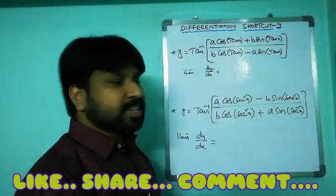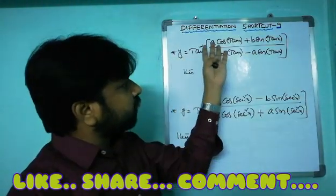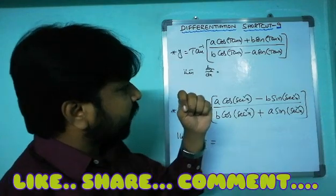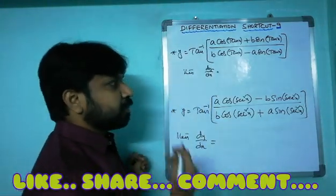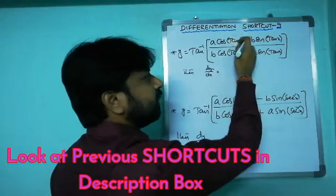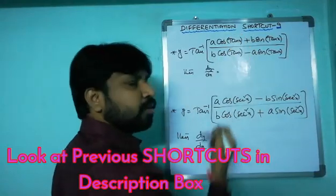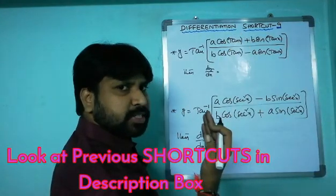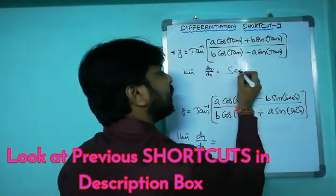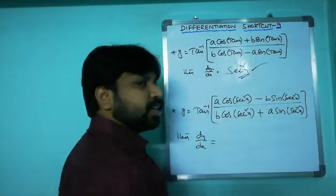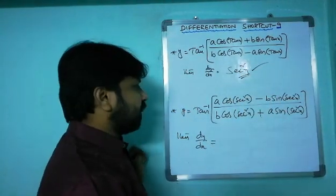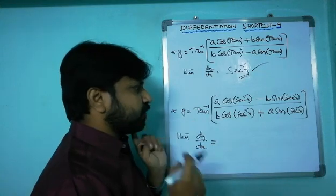Coming to multiple examples: y = tan inverse of [a·cos(tanx) + b·sin(tanx)] / [b·cos(tanx) - a·sin(tanx)]. Numerator has a plus, so it's simply f'(x) where f(x) = tanx. The derivative of tanx is sec²x. So dy/dx = sec²x. One second is enough!